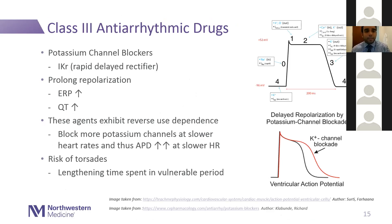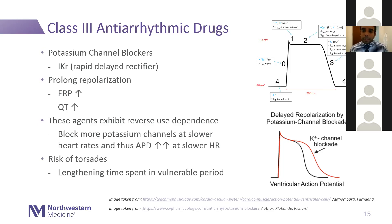Moving to class 3 antiarrhythmics — potassium channel blockers. Their primary effect is in phase three, blocking the rapid delayed rectifier potassium channel. By blocking this channel, you prevent potassium from leaving the cell, keeping the resting membrane potential elevated and prolonging phase three. This gives you a longer QT and a longer effective refractory period. These agents exhibit reverse use dependence — the opposite of class 1 agents. They block more potassium channels at slower heart rates, when more time is spent in phases two and three. At slower heart rates, the risk of QT prolongation and torsades gets even higher, increasing the risk of polymorphic VT/VF through early afterdepolarizations.